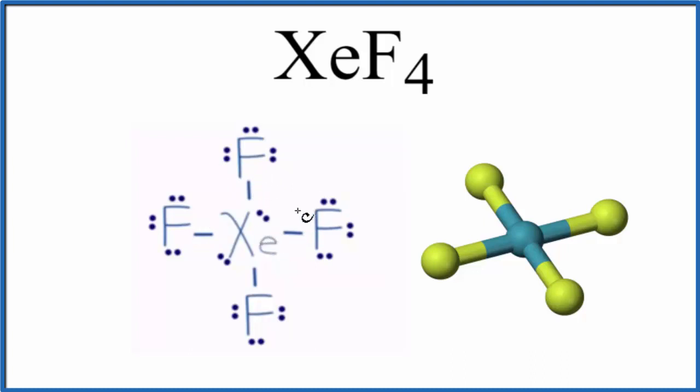The xenon has more than eight valence electrons, but it can have an expanded octet. And then by sharing, each of the fluorines have an octet, a full outer shell.